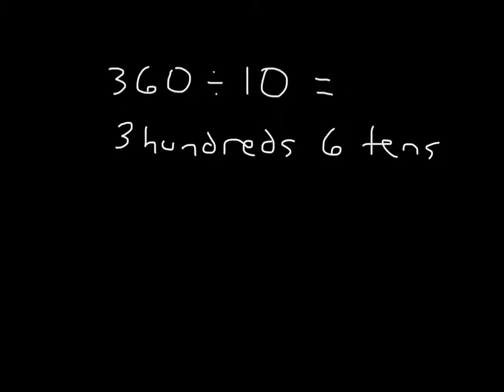Let's go ahead and divide — we're dividing each of these by 10. So we have 3 hundreds divided by 10, and 6 tens also divided by 10. We know that 100 divided by 10 is 10, so 3 hundreds divided by 10 is 30. And we also know that 1 ten divided by 10 is 1, so 6 tens divided by 10 is 6.